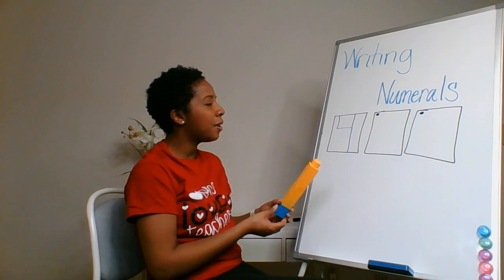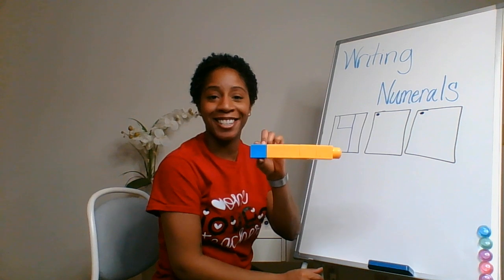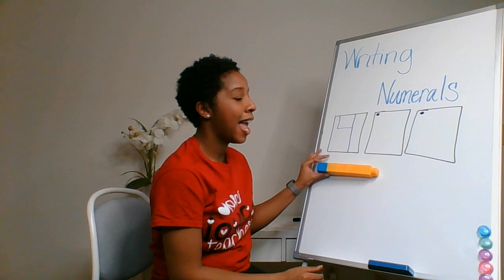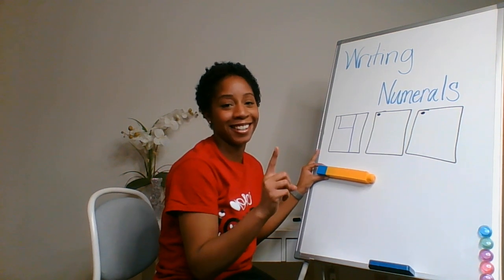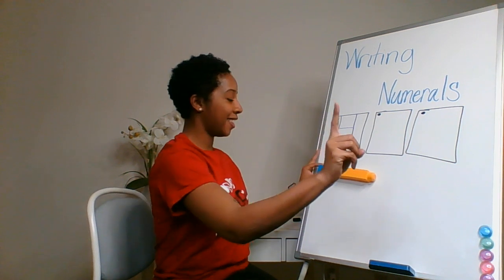Now, how can I remember that there are four counters on our pretend train? Hmm. By looking and touching and counting. Let's do it together. Get that touching finger. Are you ready? Let's do it.